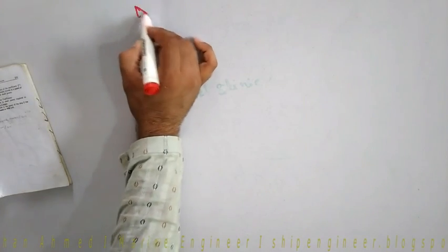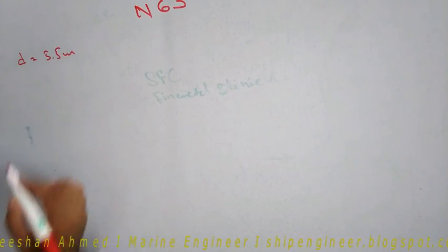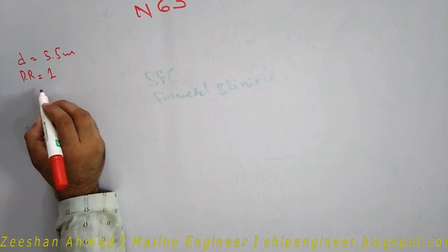Let's do some numericals of Naval Architecture. The topic is propellers. We have to solve numerical number 63 from class 2. A ship has a propeller of diameter D equal to 5.5 meters and a pitch ratio equal to 1, and a speed of 20 knots.